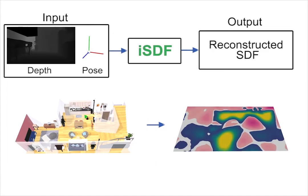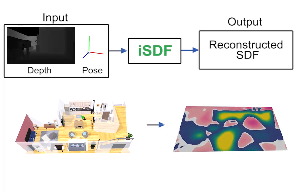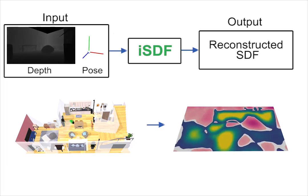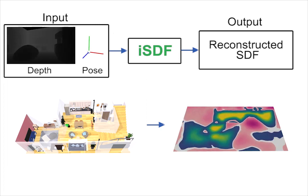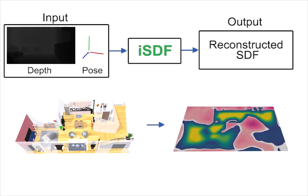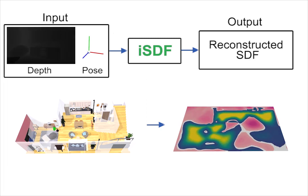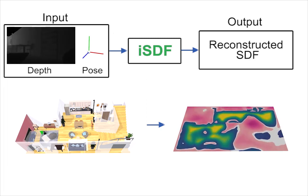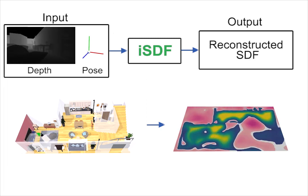In this work we tackle the real-time reconstruction of signed distance fields. On the left we show the inputs: the depth images and pose of a camera moving in a room. On the right we show the output: the reconstructed signed distance field produced by training a neural network in a continual learning manner.